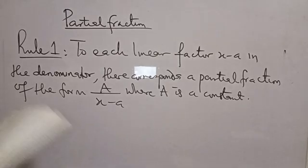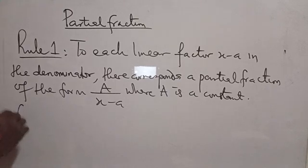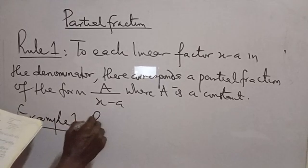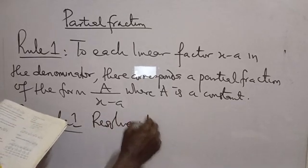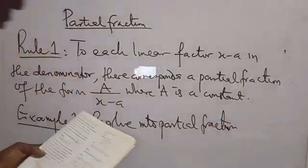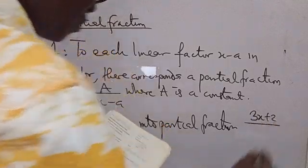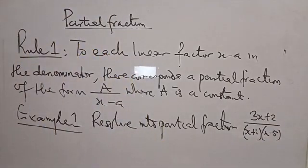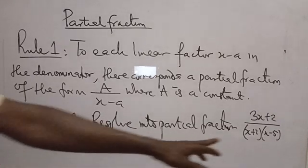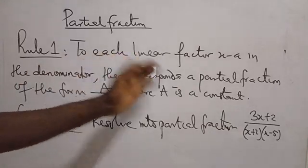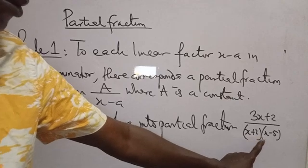Let's write the question. Example 1: Resolve into partial fractions — 3X plus 2 all over (X plus 2)(X minus 5). Now this is interesting. Let's look at this question and see whether Rule 1 is applicable to it. What this question is saying is that you have to resolve 3X plus 2 over (X plus 2)(X minus 5).